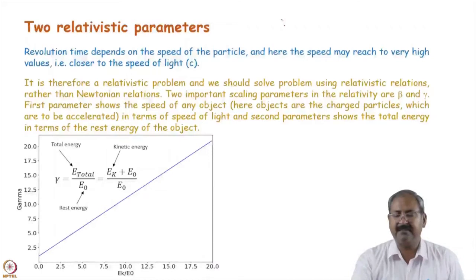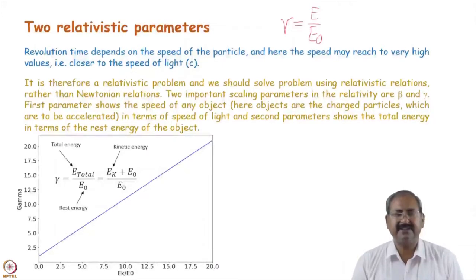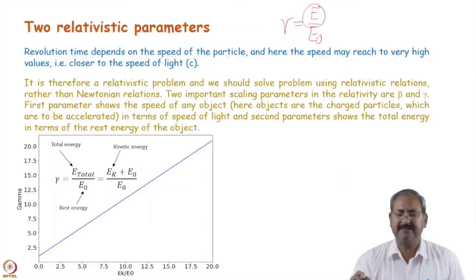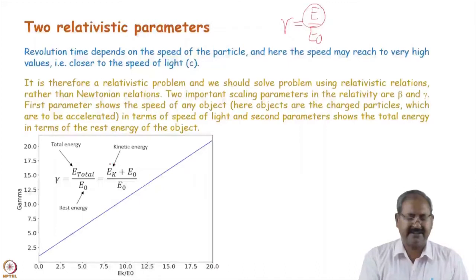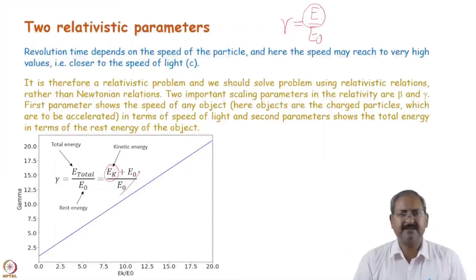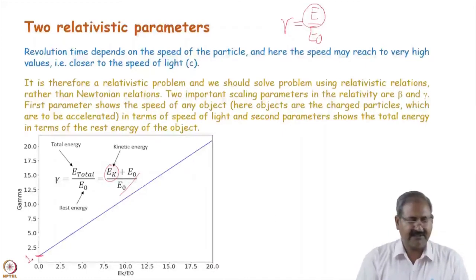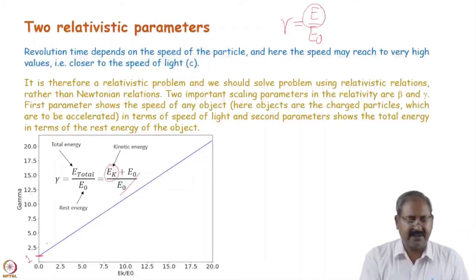In relativity, two important parameters are used. Gamma is the ratio of total energy to rest energy of the particle. For electrons, the rest energy is approximately 0.5 MeV, and for protons it is about 938 MeV, roughly 1 GeV. Total energy equals kinetic energy plus rest mass energy. The lowest value of gamma is 1, when kinetic energy is zero, and gamma increases linearly as energy increases.